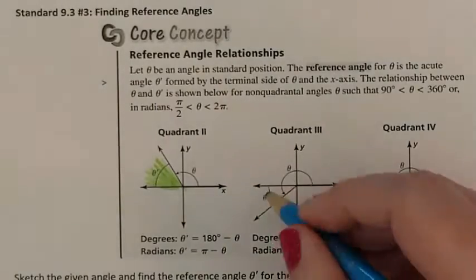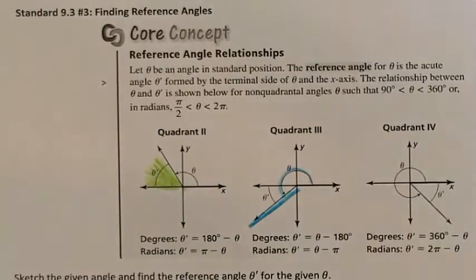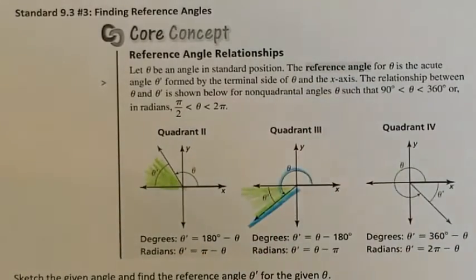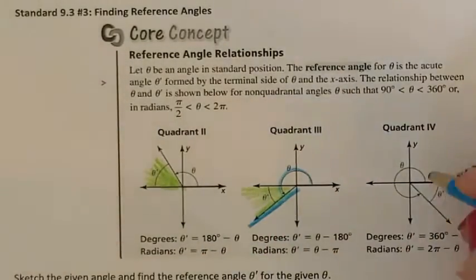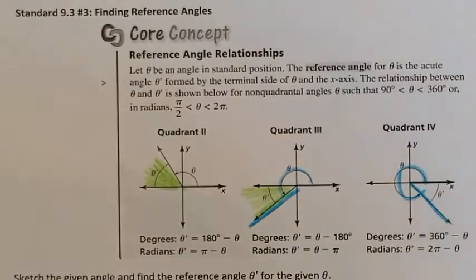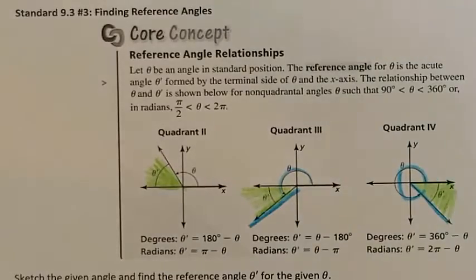In quadrant 3, even though this is your angle right here, we're wanting to know the reference angle, which is how many degrees is it to the closest x-axis. In quadrant 4, even though this entire angle is your angle right here, we want the reference angle, which is how close is it to the closest x-axis.